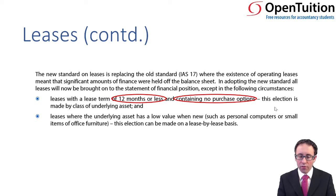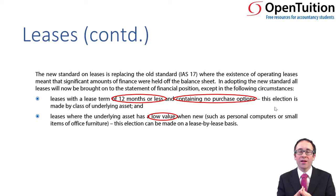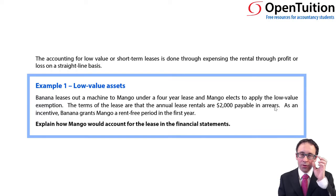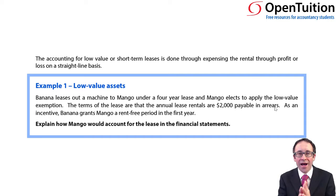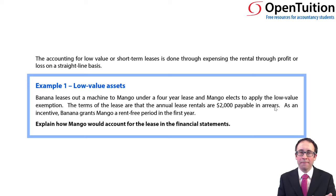The second exception is if the asset is low in value — for example, personal computers or small items of office furniture. If they're low in value, we don't record the right of use asset or the lease liability. Instead, we look at the rental payments and spread those straight line through profit or loss, so that we have an equal rental expense every single year.